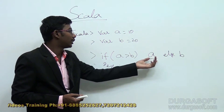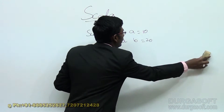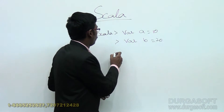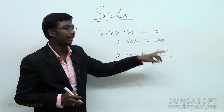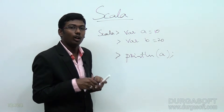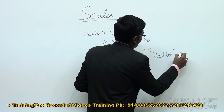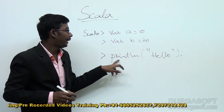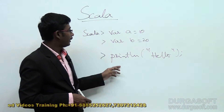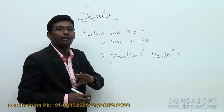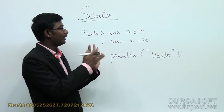If you want to print the values of these variables, we use println. You can also just type the variable name and press enter to get the value. But if you want to display text like 'Hello World' in the console, use print or println — both work in Scala. The difference is that print keeps the cursor on the same line, while println moves the cursor to the next line after the statement executes.